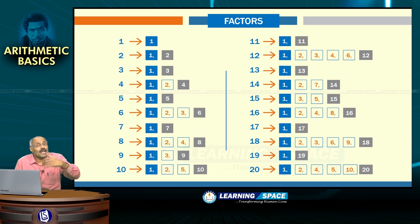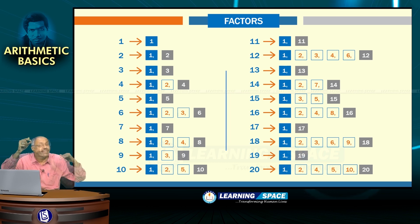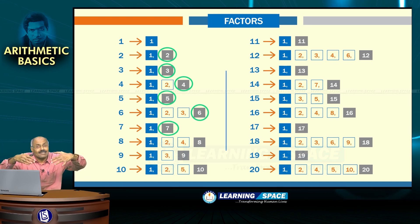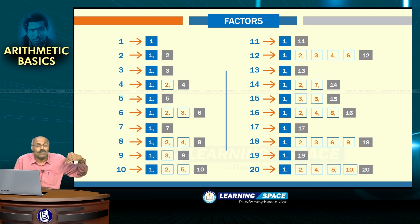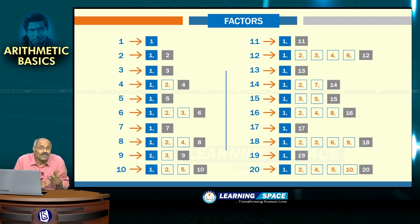I have highlighted 1 to indicate that the least factor for any number is 1, and I highlighted the numbers 2, 3, 4, 5, 6, 7 to make sure you understand that the highest factor is that number itself. To recapitulate: for any number, the least factor is 1, the highest factor is that number itself, and the number of factors for any number are fixed.